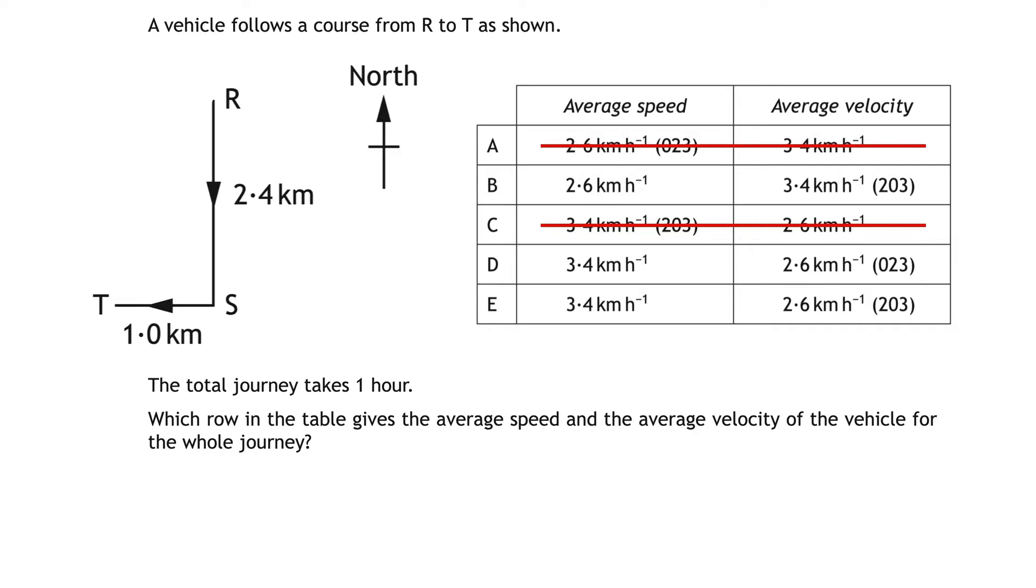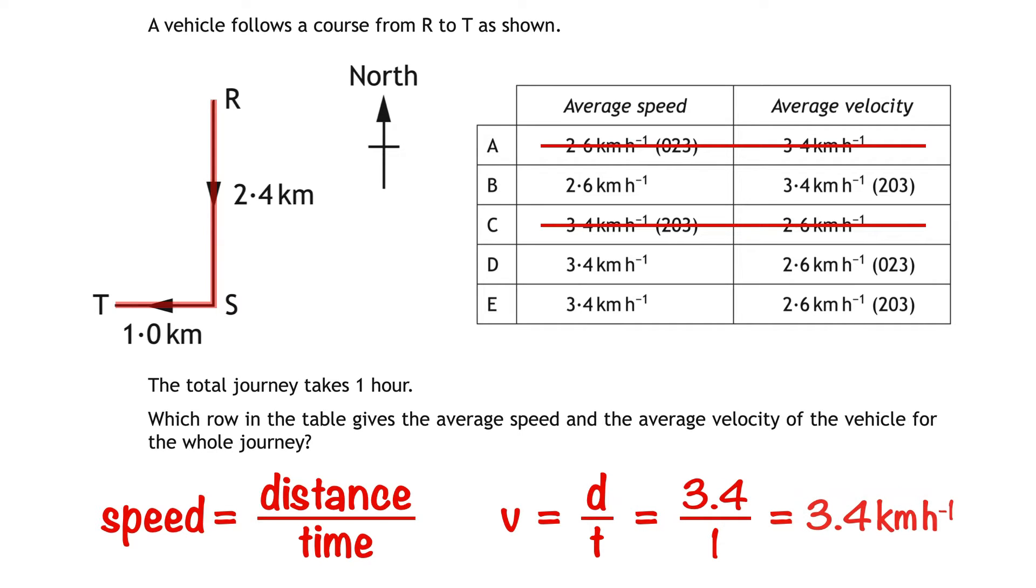Next up we'll calculate the speed of the vehicle. To do that we need to find the total distance travelled by the vehicle which is 2.4 plus 1.0 which is 3.4 kilometres. We then use this equation which in the relationship sheet is written as v equals d divided by t. That gives us 3.4 divided by 1 which is 3.4 kilometres per hour. So the answer isn't B.